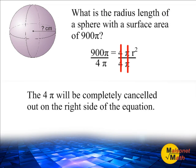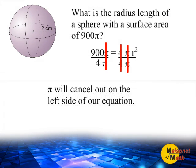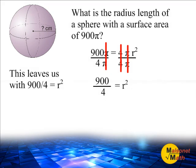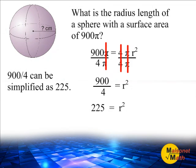And π will cancel out on the left hand side of our equation. That leaves us with 900 divided by 4 is equal to the radius to the second power. 900 divided by 4 is 225. Now we have an equation that reads 225 is equal to radius to the second power.